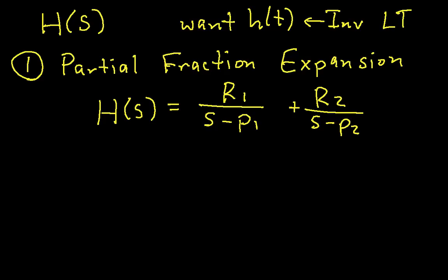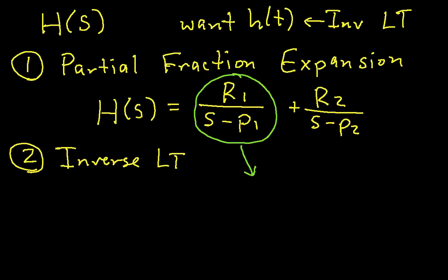Once we have the partial fraction expansion, then we just compute the inverse Laplace transform of each term. For example, something that looks like this, you can easily look up in a table and see that this would have the inverse transform of R1 e to the P1t U(t), and similarly for this term. So, once you get the partial fraction expansion, getting the inverse Laplace transform of each term is easy.